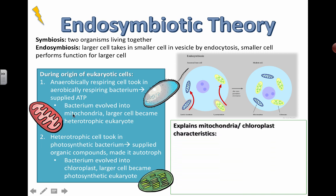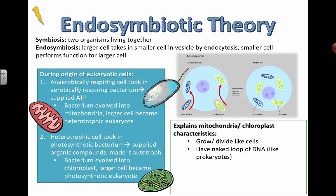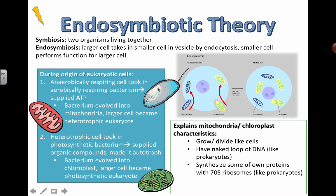Not only are mitochondria and chloroplasts the same size as bacteria, but they also grow and divide like bacterial cells through binary fission. They have DNA inside — naked loops of DNA, just like prokaryotes, without histones — called mitochondrial DNA. There's also DNA inside chloroplasts. They have their own ribosomes, and these ribosomes are 70 Svedberg units in size — the same as prokaryotic ribosomes — while eukaryotic cell ribosomes are 80 Svedberg units. The ribosomes inside mitochondria and chloroplasts match the prokaryotic size. That's remarkable evidence.